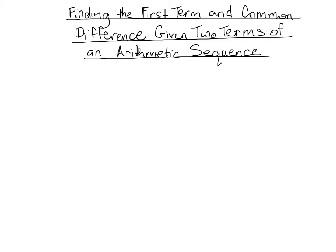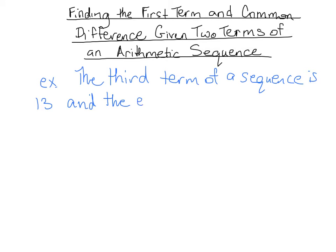Okay, so let's say for example we have a sequence and we're given the third term. I'm going to write it in words because you may see it in words. So the third term of a sequence is 13 and the eighth term is 28. So I want to find u1, I want to find d, I also want to find the general term for good measure.